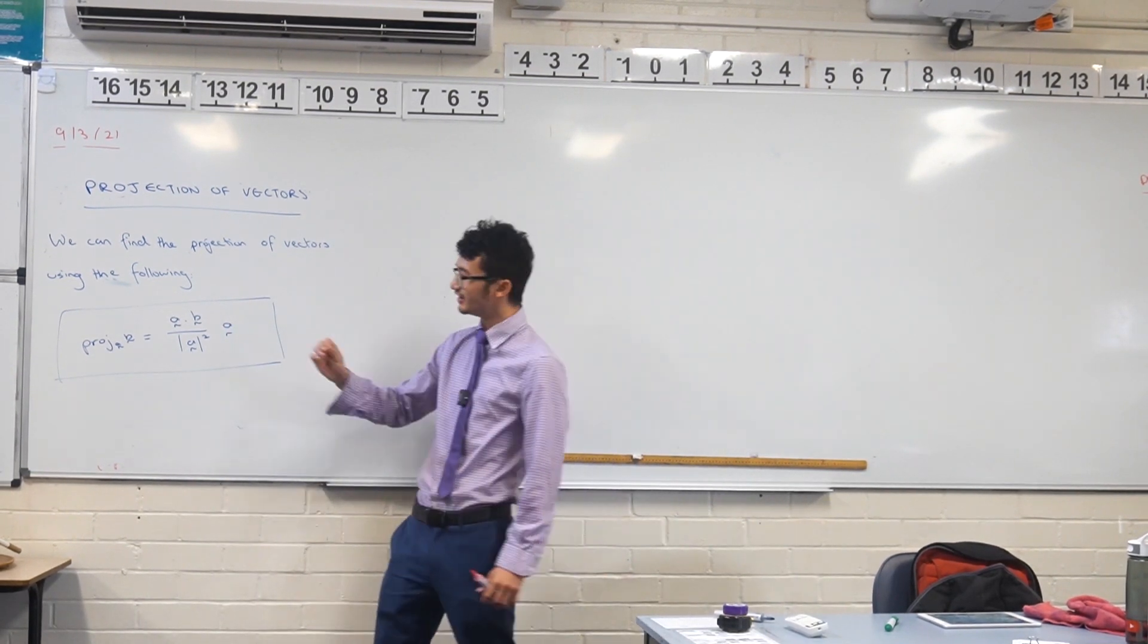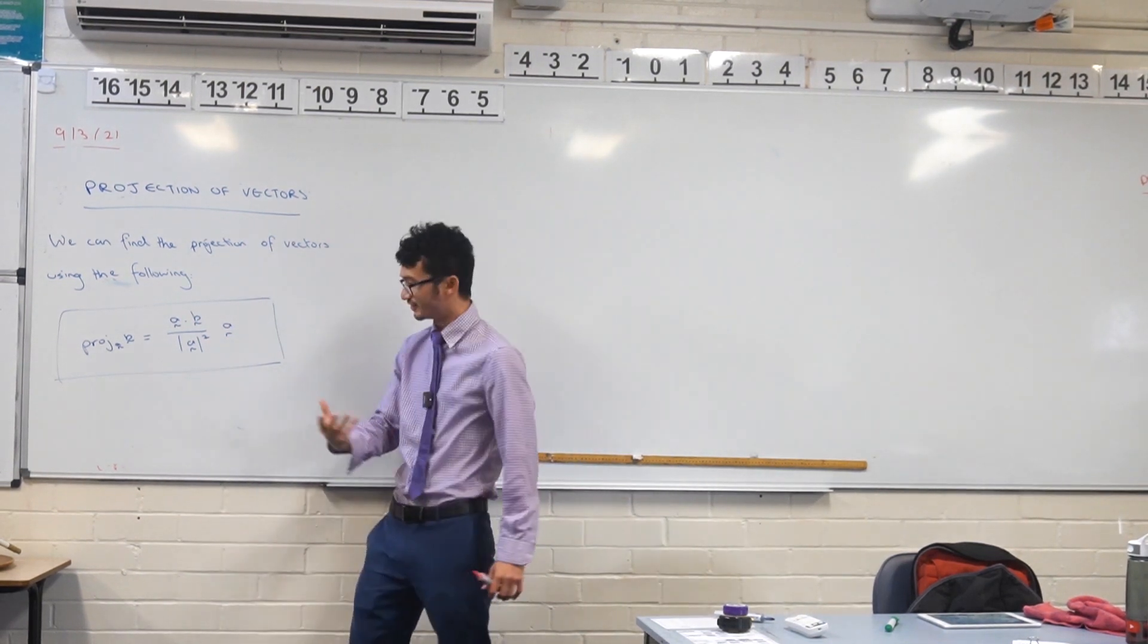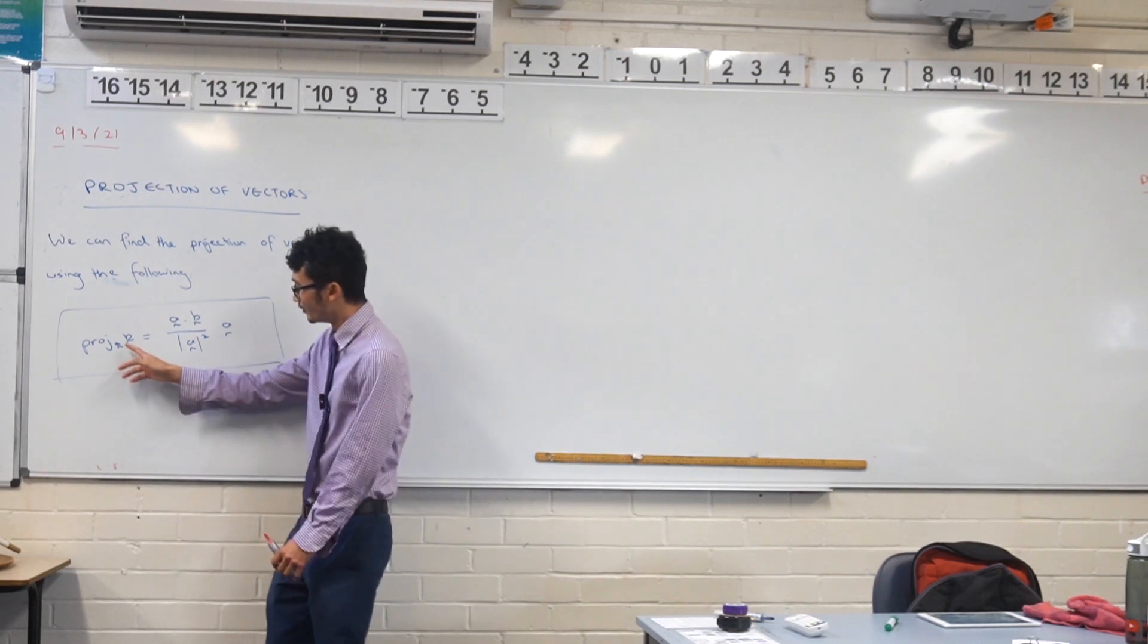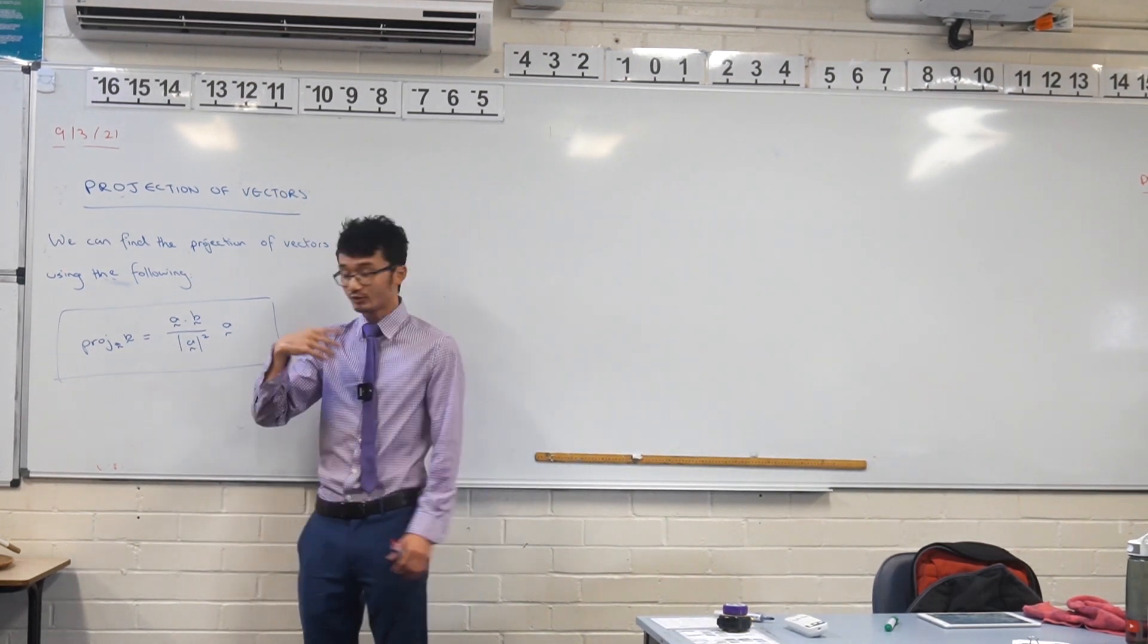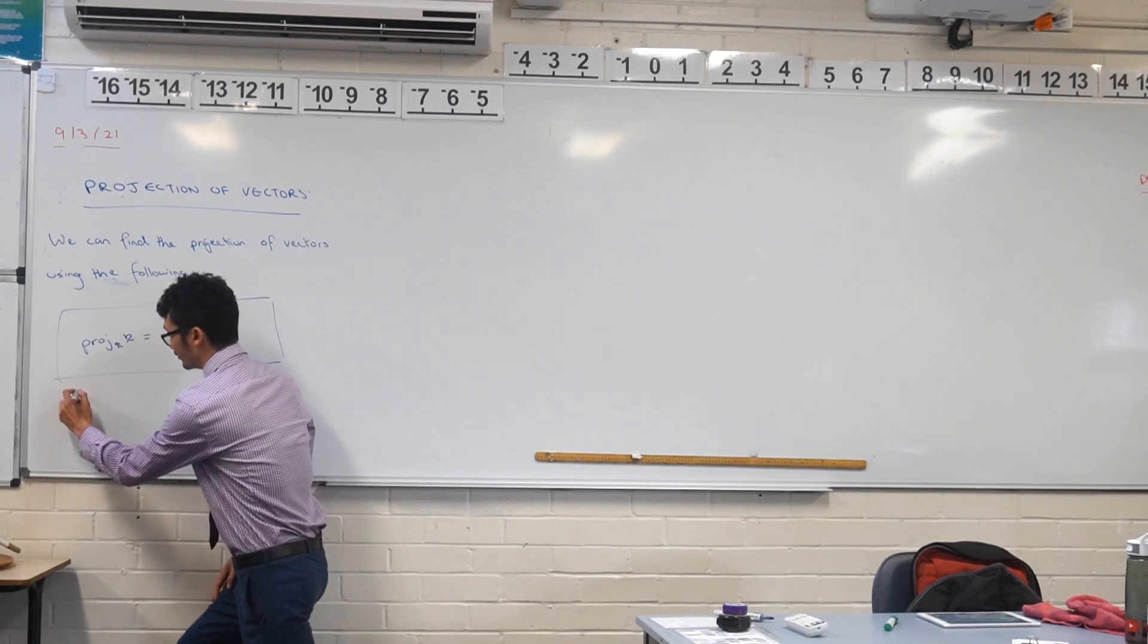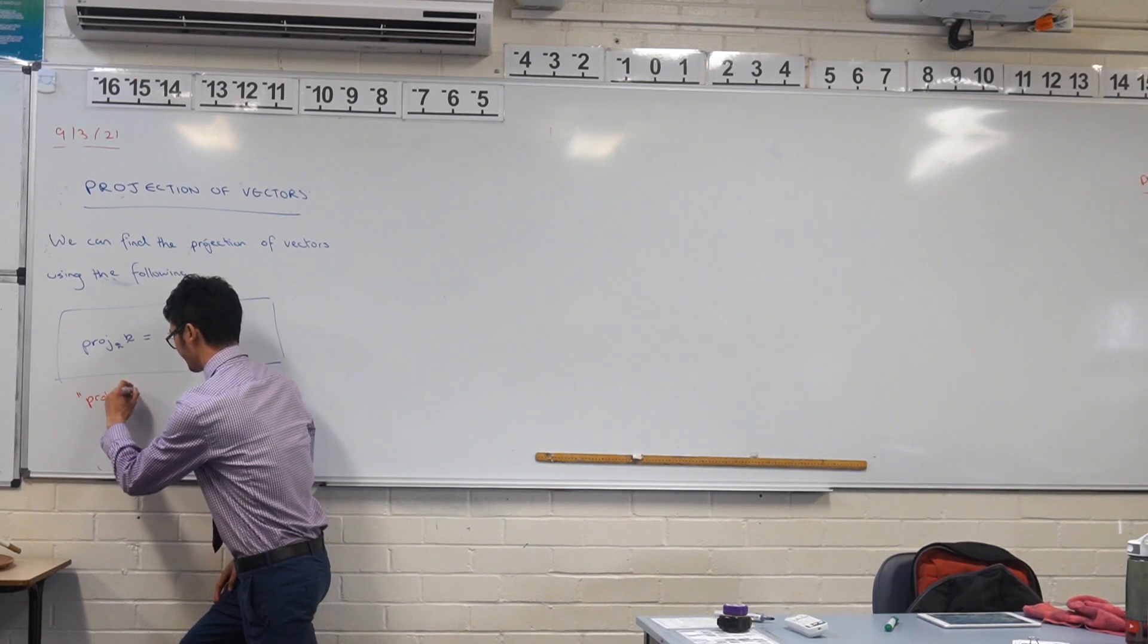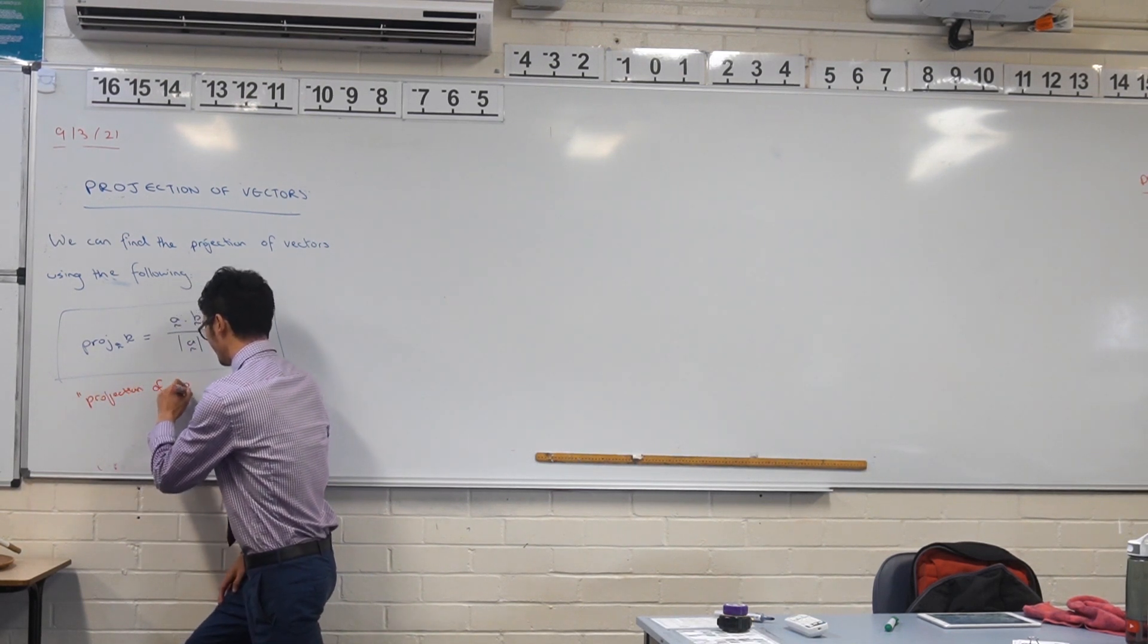Okay so I'll say it again. The projection of a vector onto another is actually going to be another vector. I know, mind blank. The way that we read this is, we say this is the projection of B onto A. This is the projection of B onto A.